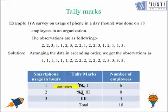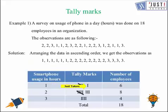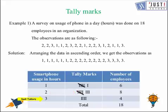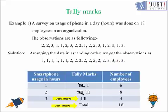Then we put tally marks. If we see 1 once, we put 1; again we see 1, 2, 3, 4, 5, and 6 — so we have a set of 5 and then 1 more. In total we have the frequency of 6. For 2 we have a frequency of 8 — a set of 5 and then 3 more. For 3 we have a total of 4, so the frequency is 4. You can see the total is 18, which is the sum of all the frequencies given. This is how we show our data with the help of tally marks.